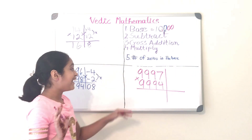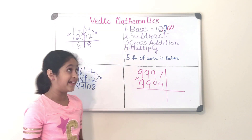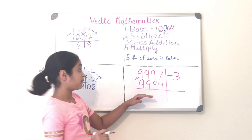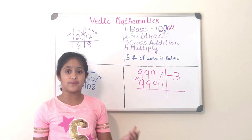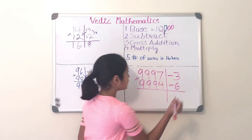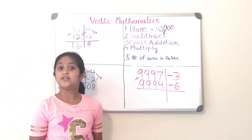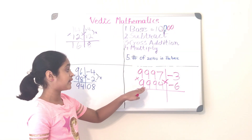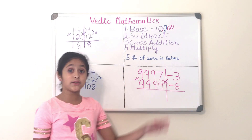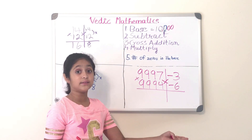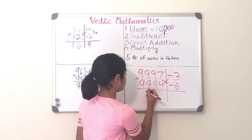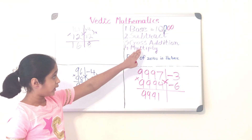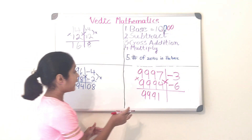Step two: subtract. We do 9,997 minus 10,000, which equals minus 3. We also subtract 9,994 minus 10,000, which equals minus 6. Step three is cross addition. We do 9,994 plus minus 3 — and remember, doing it the other way gives the same result — which equals 9,991.